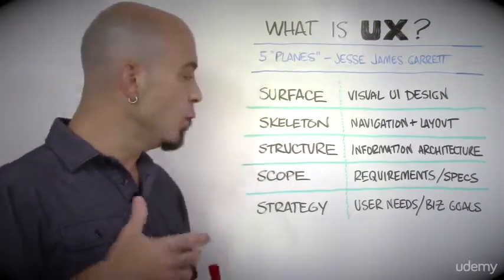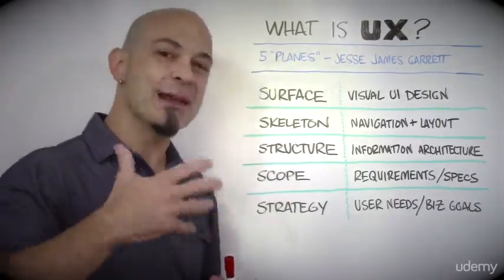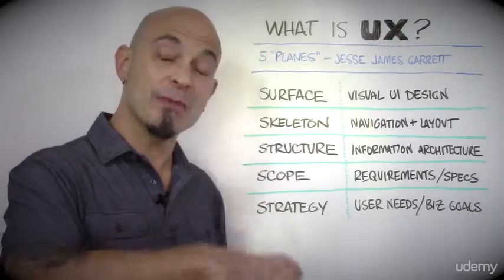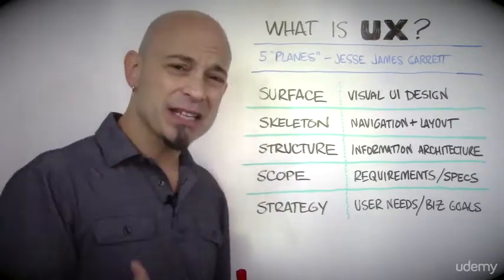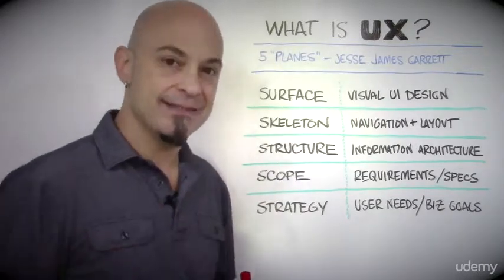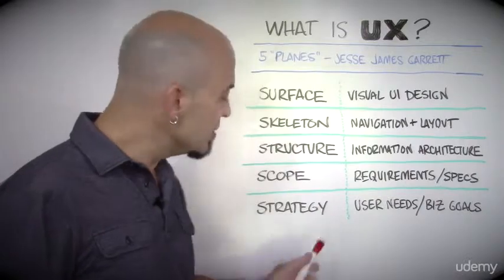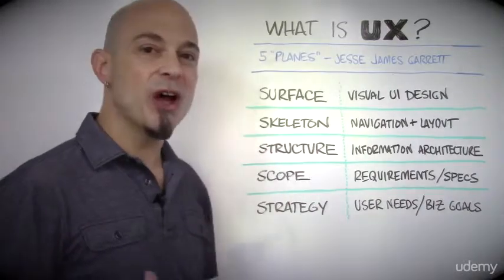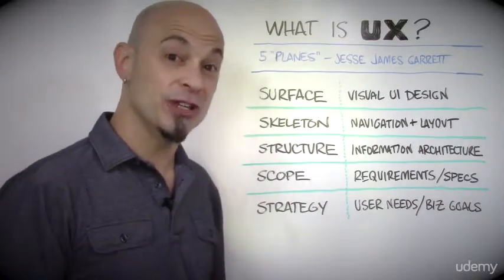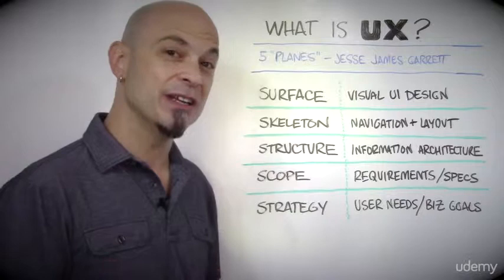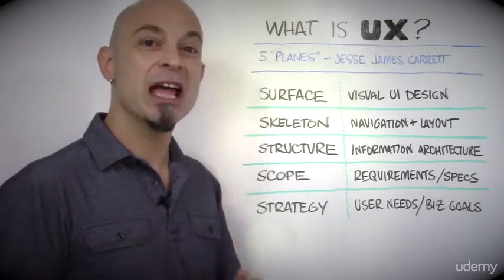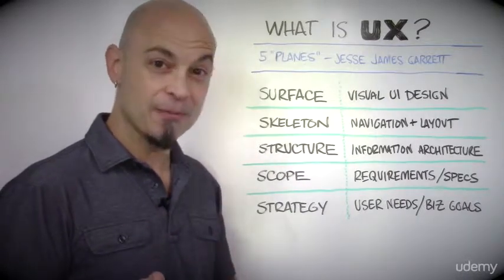The idea is that no matter what you're building — any type of digital product — it started with websites, obviously, but enterprise systems, apps, anything — essentially follows this model. All five of these things have to be included and considered in order to create something that's useful, usable, and valuable.